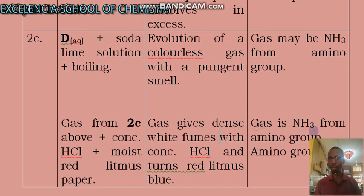You infer that gas is ammonia from amino group, which means that amino group is present. So you have concluded, you have succeeded in showing that amino group is present. Amino group may just be from an amino acid, or maybe there is a protein present. And that is where the next question comes in.